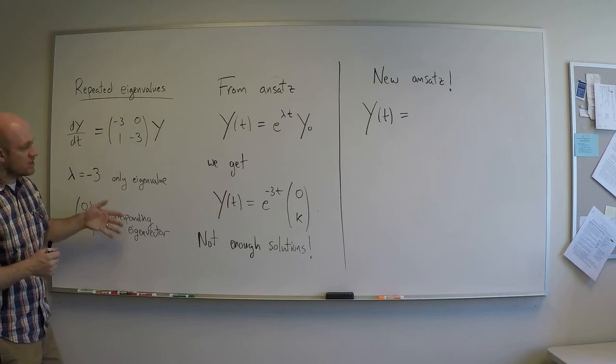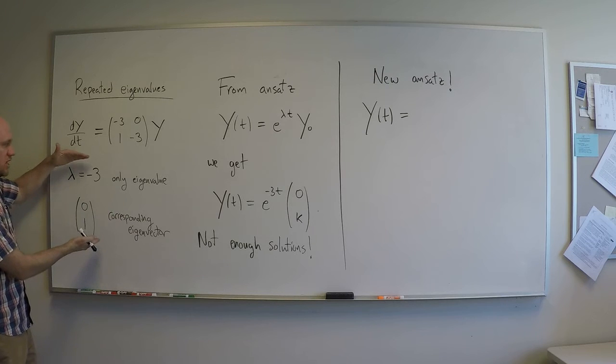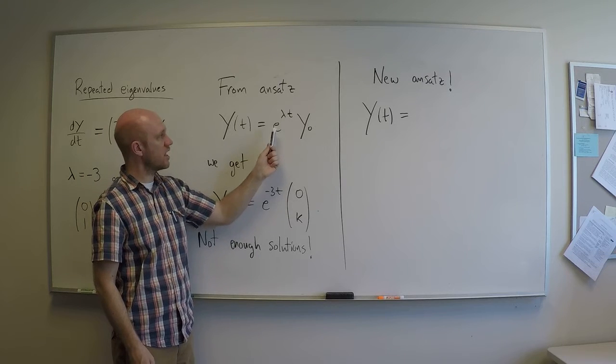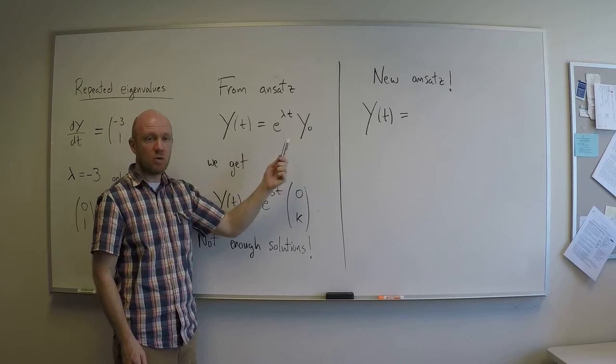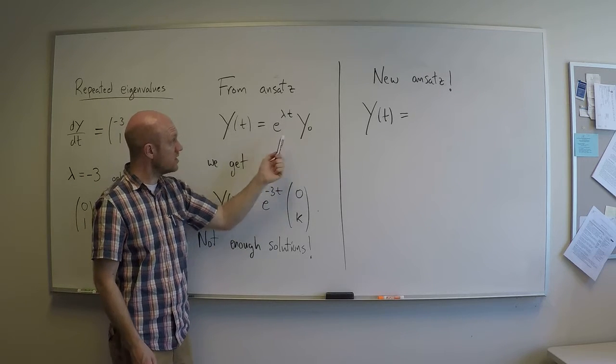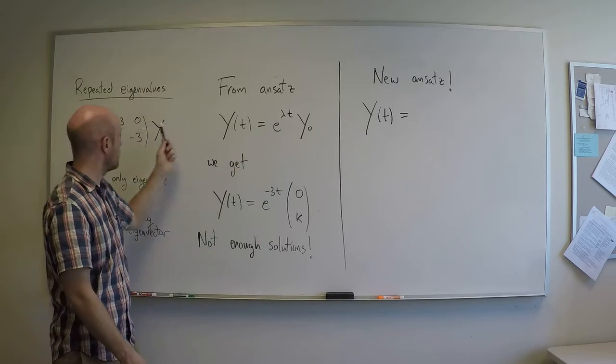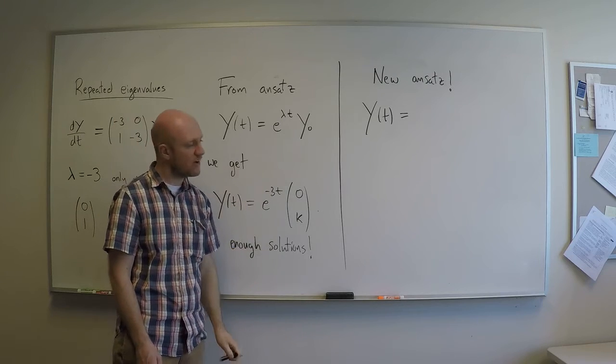Now, if we return to the ansatz that motivated these computations, the search for eigenvalues and eigenvectors, the ansatz was y(t) = e^(λt)y0. And it happened to work out that when we plug this into the differential equation, we find that lambda must be an eigenvalue for this matrix, and y0 an associated eigenvector.